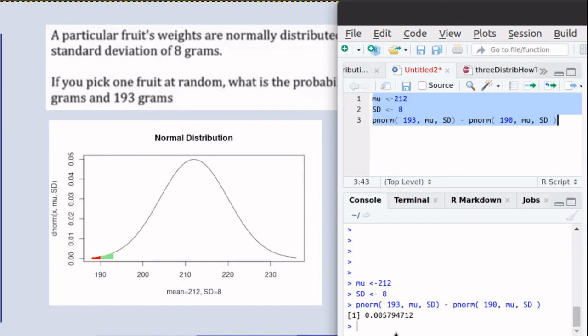So we found the area here because PNORM always finds the probability or the area less than a particular number. So if we wanted to find the area between two numbers, we'd find the area below the larger number minus the area below the smaller number. So we'll see you later. Take care.